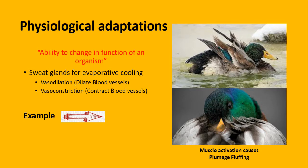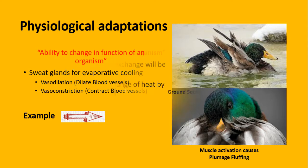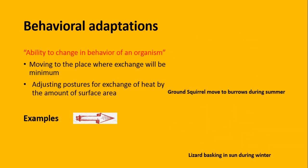Muscle activation causes plumage fluffing: birds اور mammals کو آپ نے اکثر دیکھا ہے کہ یہ اپنی چونچ کو body میں رگڑتے ہیں اور body میں rub کرنے کی وجہ سے یہ اپنے plumage یعنی feathers کو fluff کرتے ہیں۔ Fluffing means ان کو بڑھا کر جھٹکتے ہیں، جس process کی وجہ سے یہ اپنے muscles کو active کرتے ہیں تاکہ thermoregulation provide کریں۔